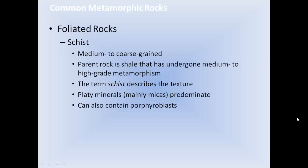Schist is medium to coarse-grained. The parent rock of shale has undergone medium to high-grade metamorphism. The term schist describes the texture; platy minerals, mostly micas, predominate, making it very shiny. Schist can also contain porphyroblasts.